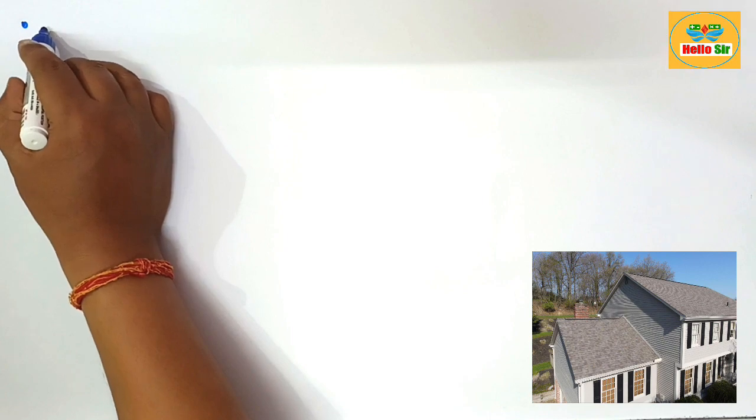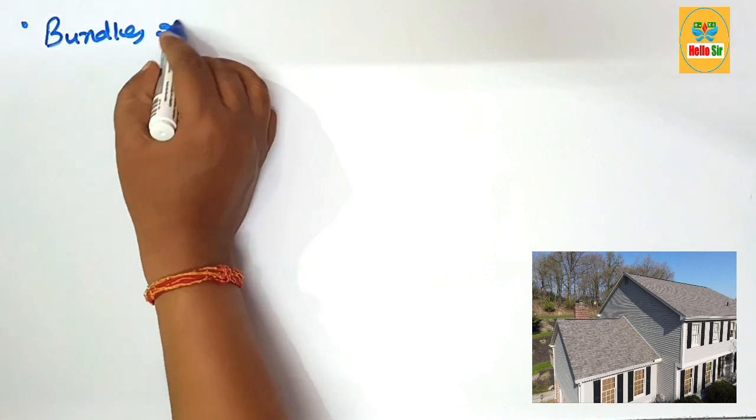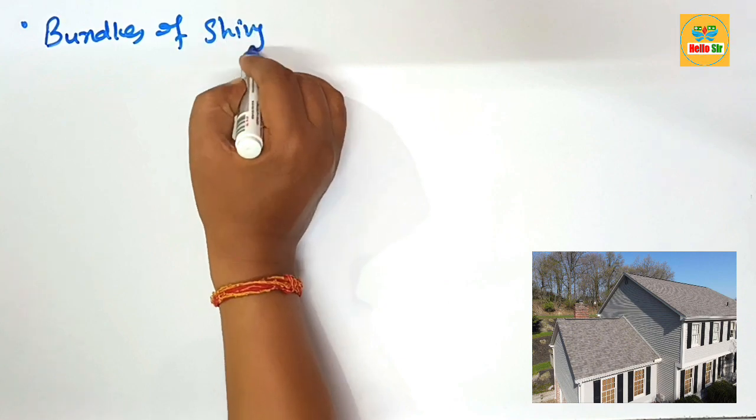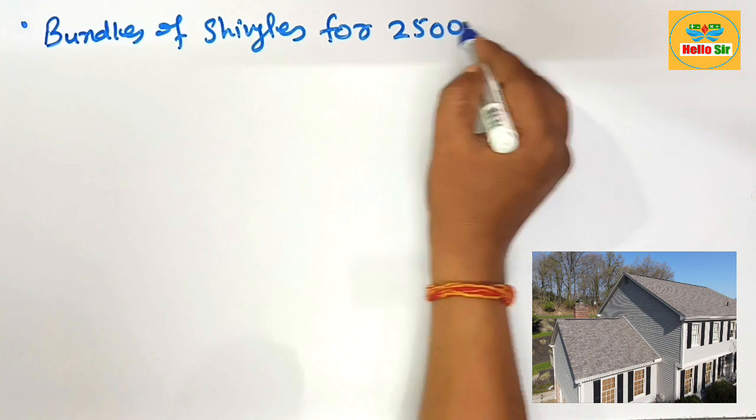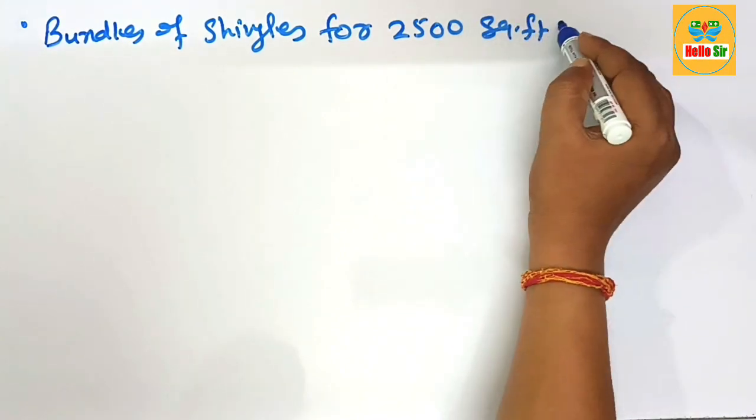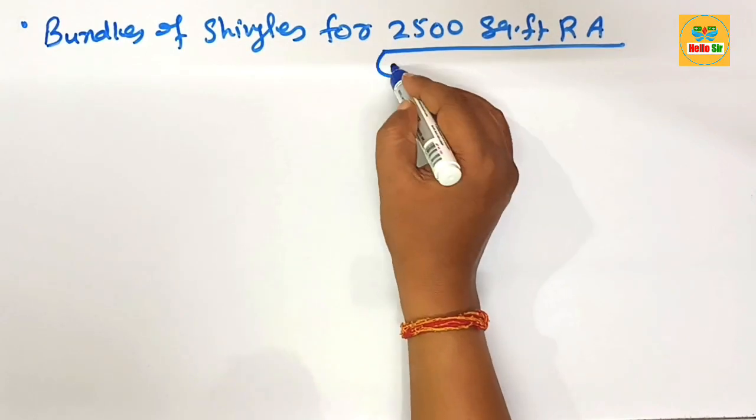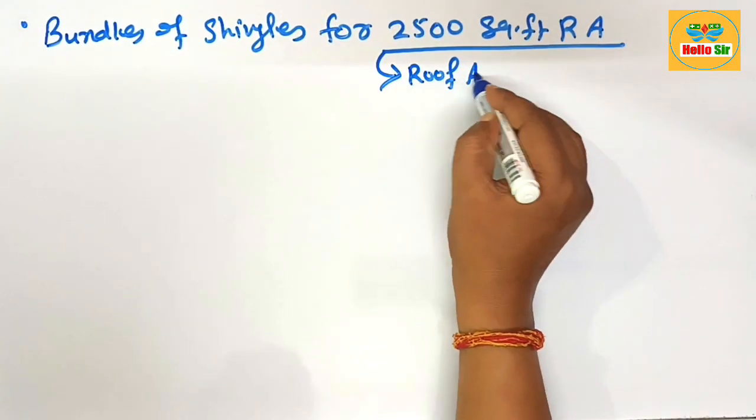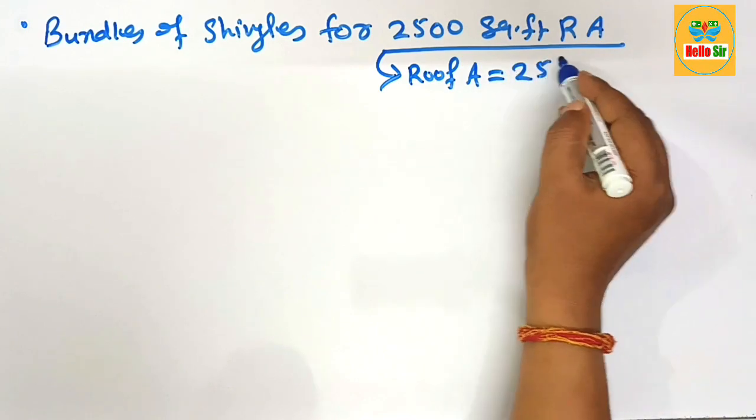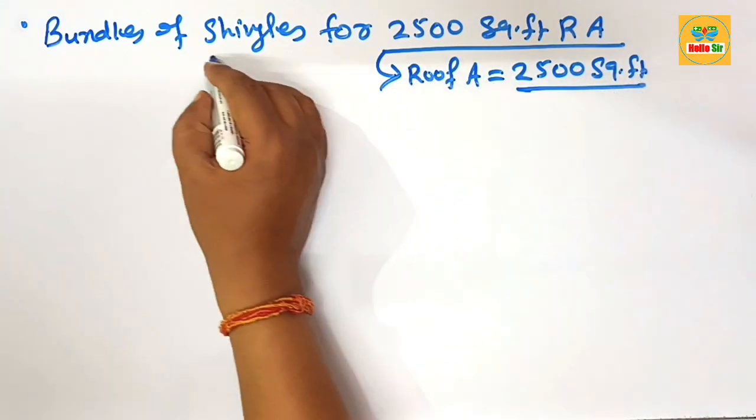In this video we know about how many bundles of shingles do I need for 2500 square footage roof area. Here you have the given dimension of roof area that is 2500 square footage and you know that the shingles